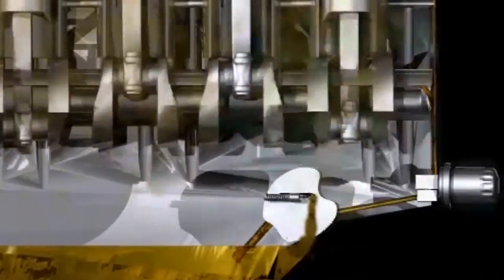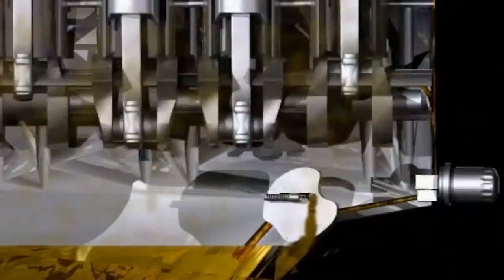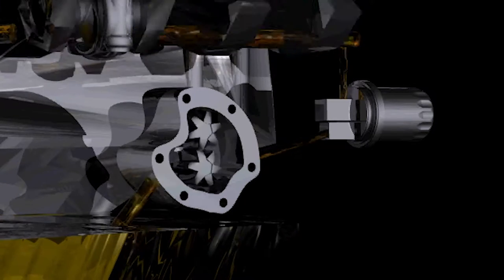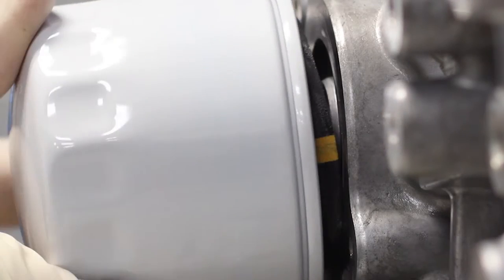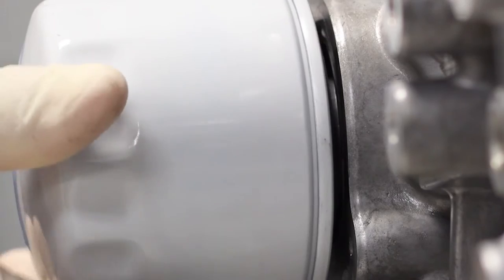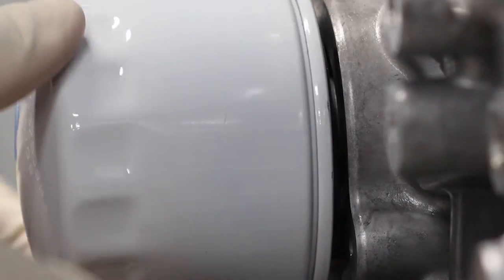If this valve becomes defective and fails to open for any reason, the filter will quickly be subjected to excessive system pressure. This often results in the deformation of the filter can and base. If the filter was not sufficiently tightened during installation, the gasket may be displaced with no apparent damage to the filter.